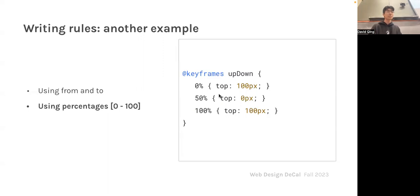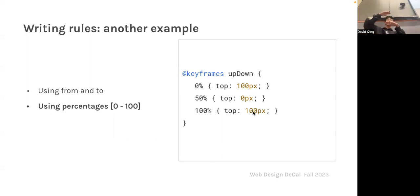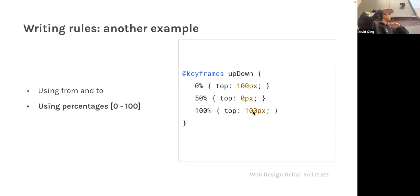You don't have to do this with just opacity — you can use pretty much any CSS attribute. For example, using `top` to control the top margin: starting 100 pixels pushed down, at 50% the top becomes 0 pixels so it comes up, and then it gets pushed back down 200 pixels. That's how you encode motion using keyframe percentages.